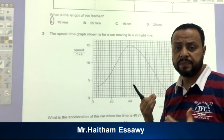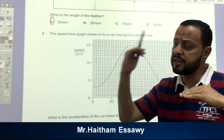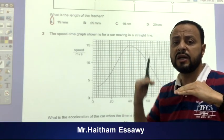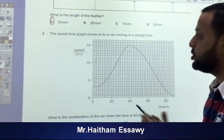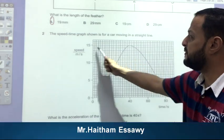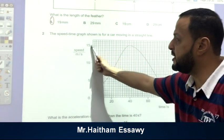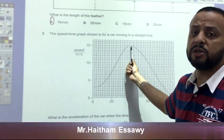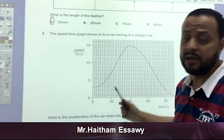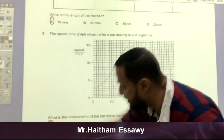Because we said that acceleration equals change in the speed divided by change in time. But in this case, there is no change in the speed. The speed equals 15. Because time equals 40 seconds, speed equals 15. No change in the speed. So the acceleration will be equal 0. So this is the right answer.